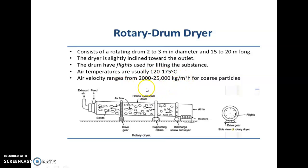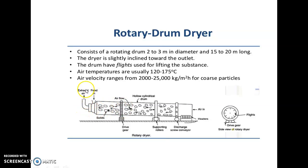The air is taken in, it is heated, and then moved over this wet solid. So the moisture gets added in this air, and the air is taken out from this exhaust. In this way the rotary drum dryer is operated.